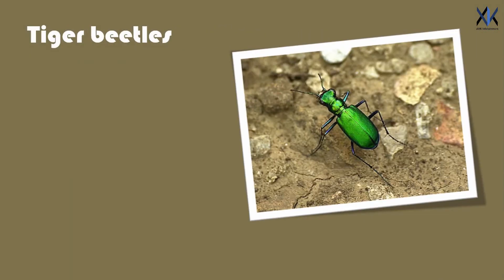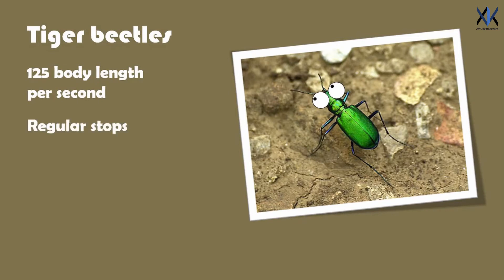This problem is very much real for the insect called as tiger beetle. This insect is very fast. Due to this speed, the insect can't see its surroundings while traveling at such a speed. So in order to compensate that the insect stops in between so that it can see its surroundings and make sure that it is not hitting anything on the way. Now let's increase the severity.